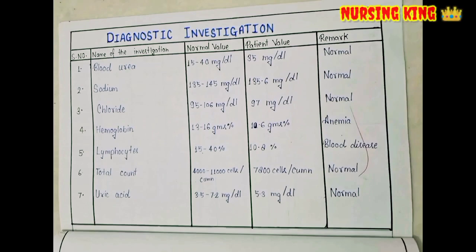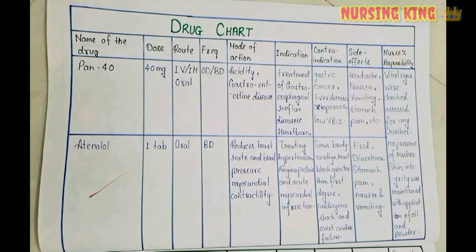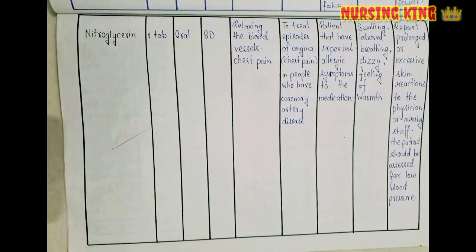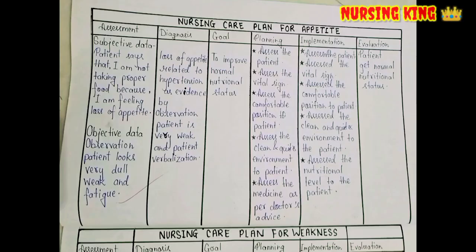After physical examination, you have to write the diagnosis and investigations — like blood tests, serum levels, and what the findings are. After diagnosis, you write the drug chart — what drugs are administered based on the disease condition, including dose, frequency, route, and nursing responsibilities.